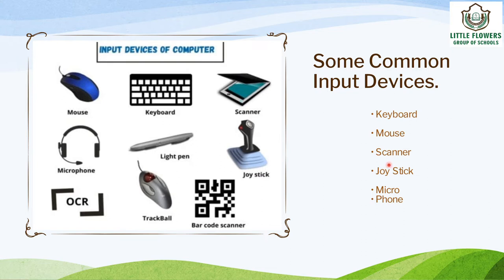A scanner is used to read paper documents, images, or pictures and send them as input into the computer. A joystick is used to play games on a computer and helps to control different movements in the game. A microphone is an input device used to record voice, music, and sound, which can then be stored on a computer.